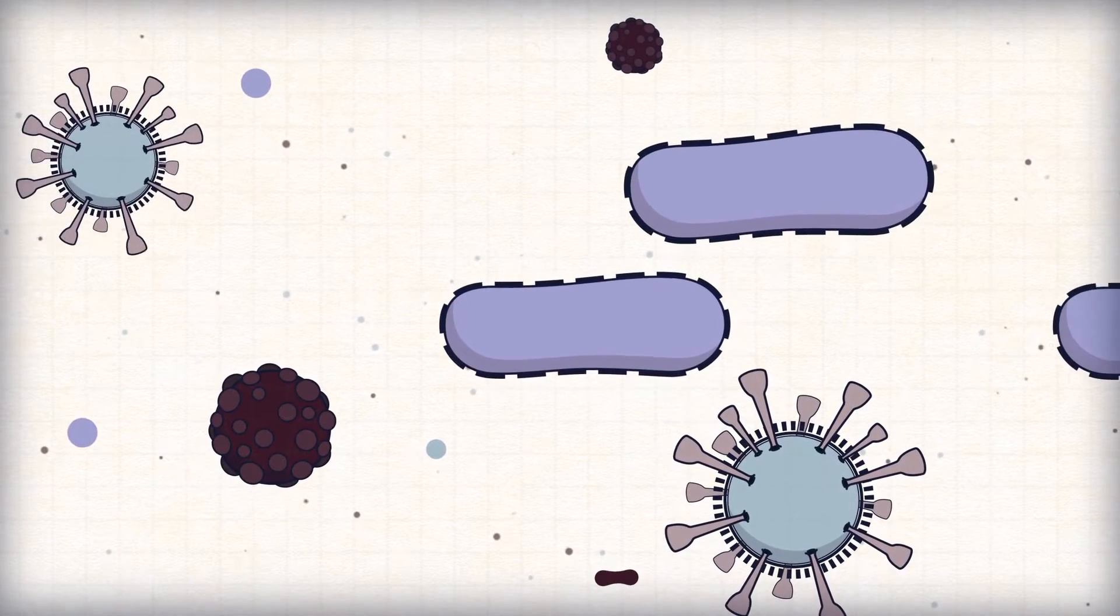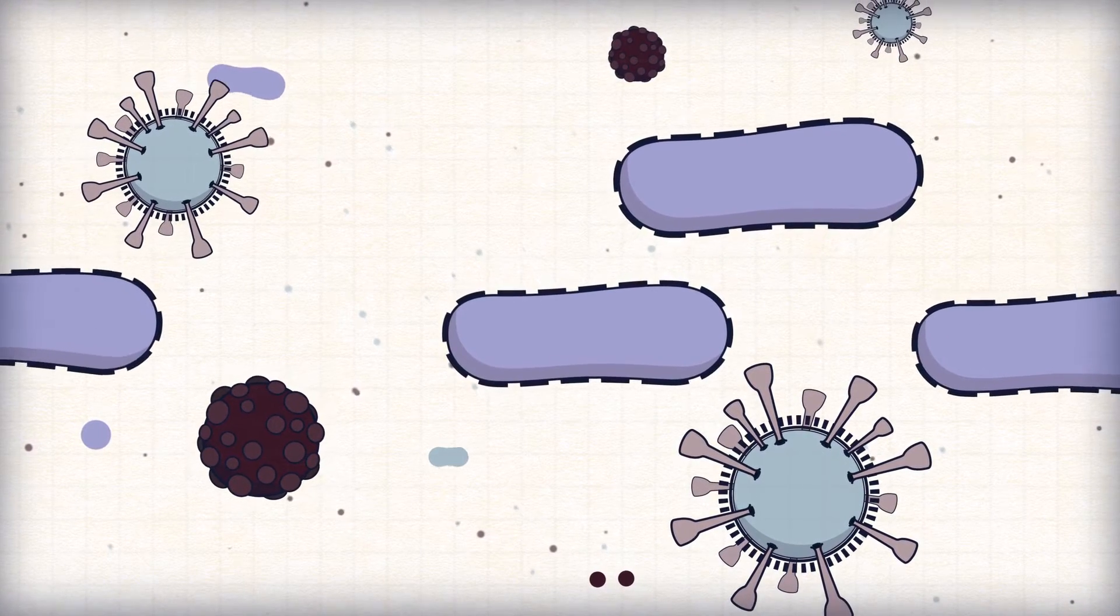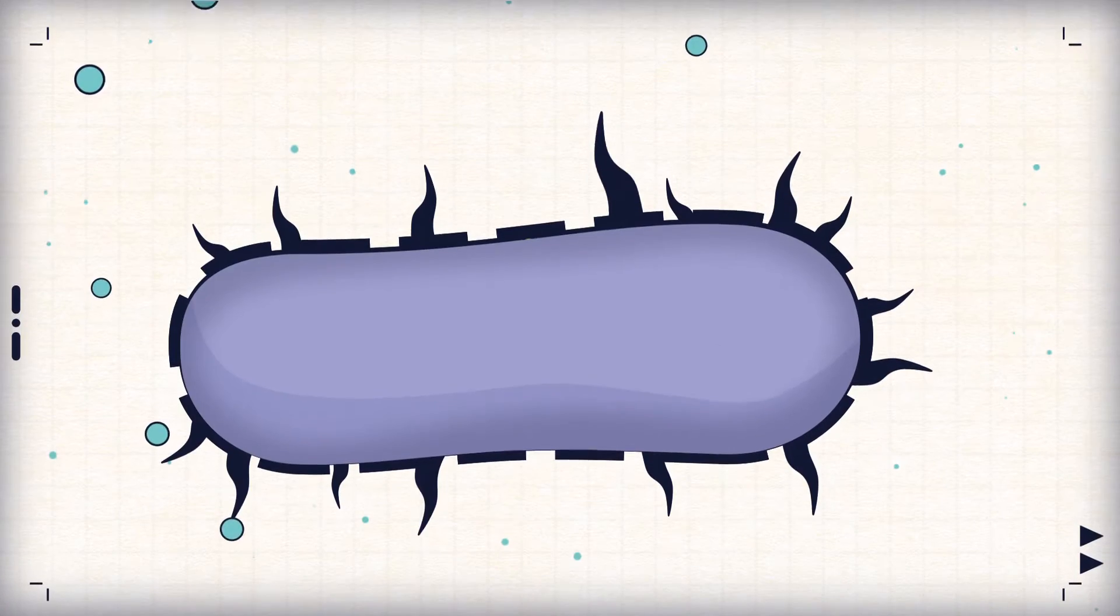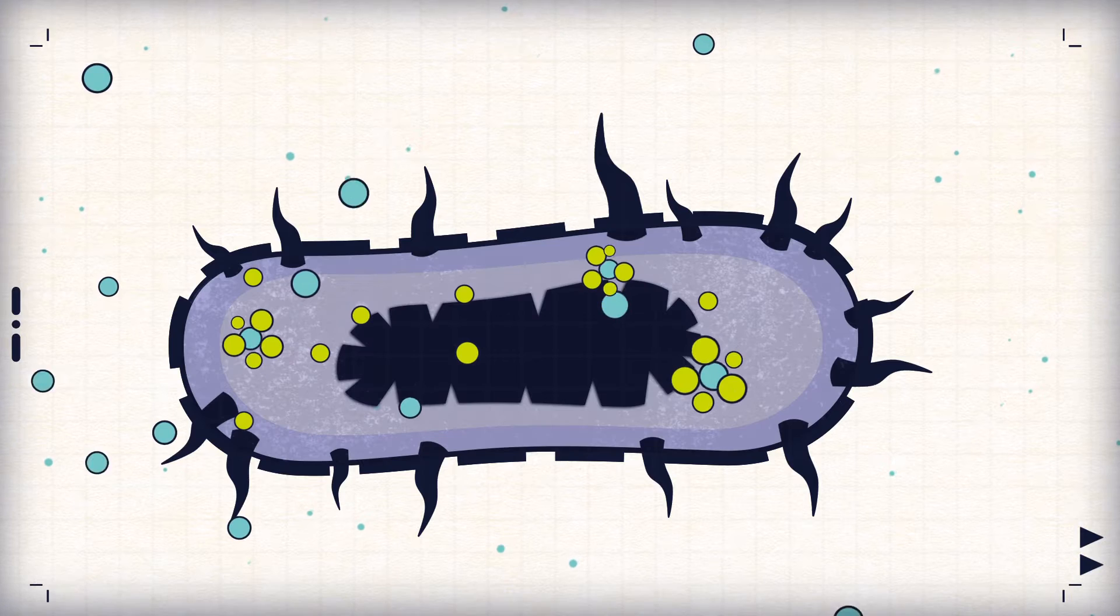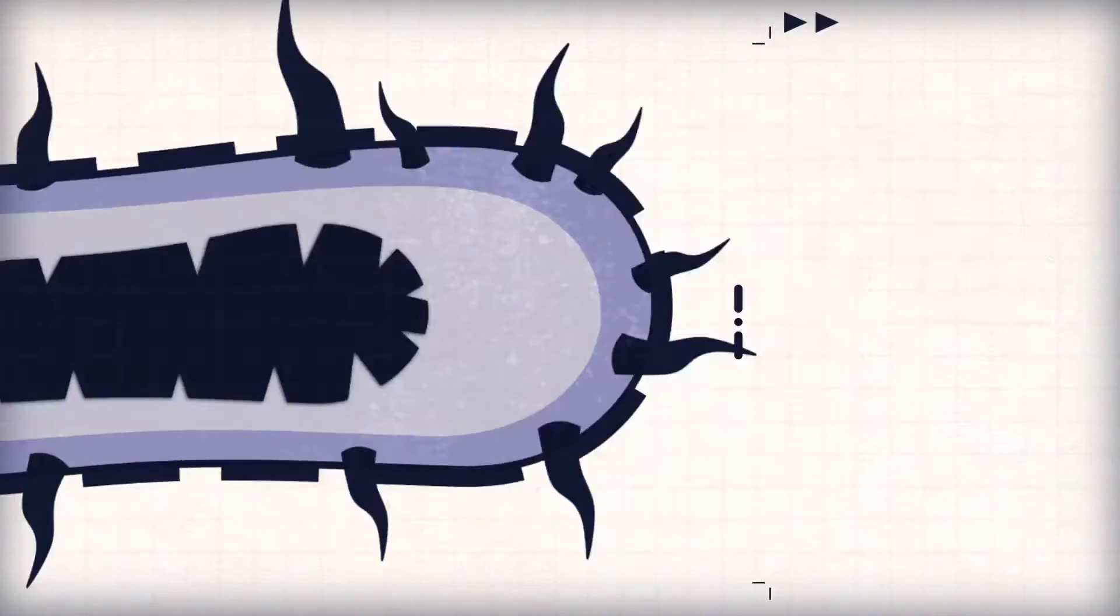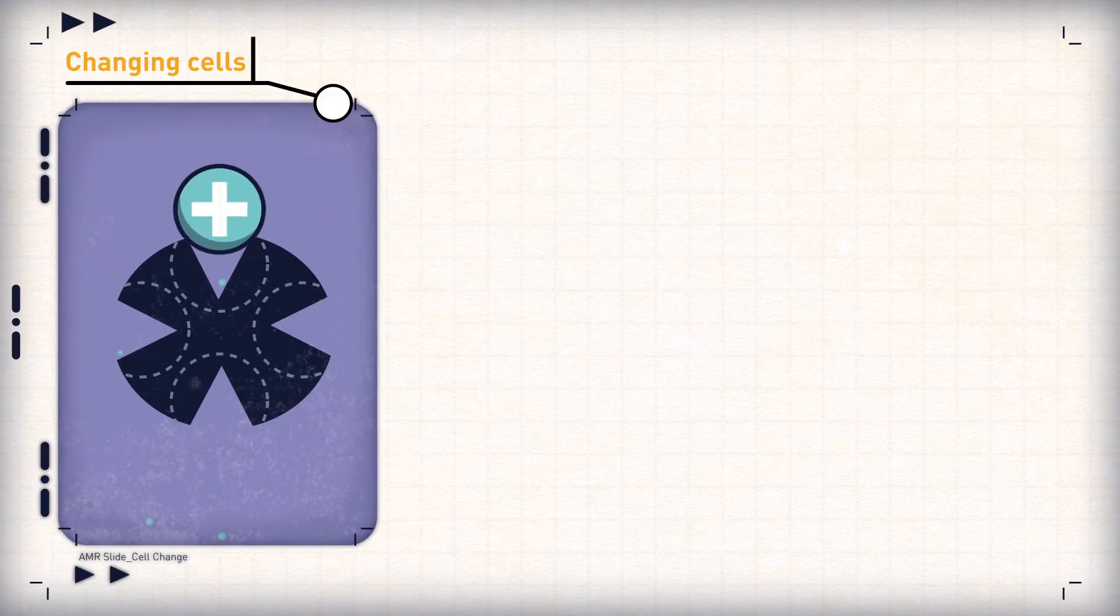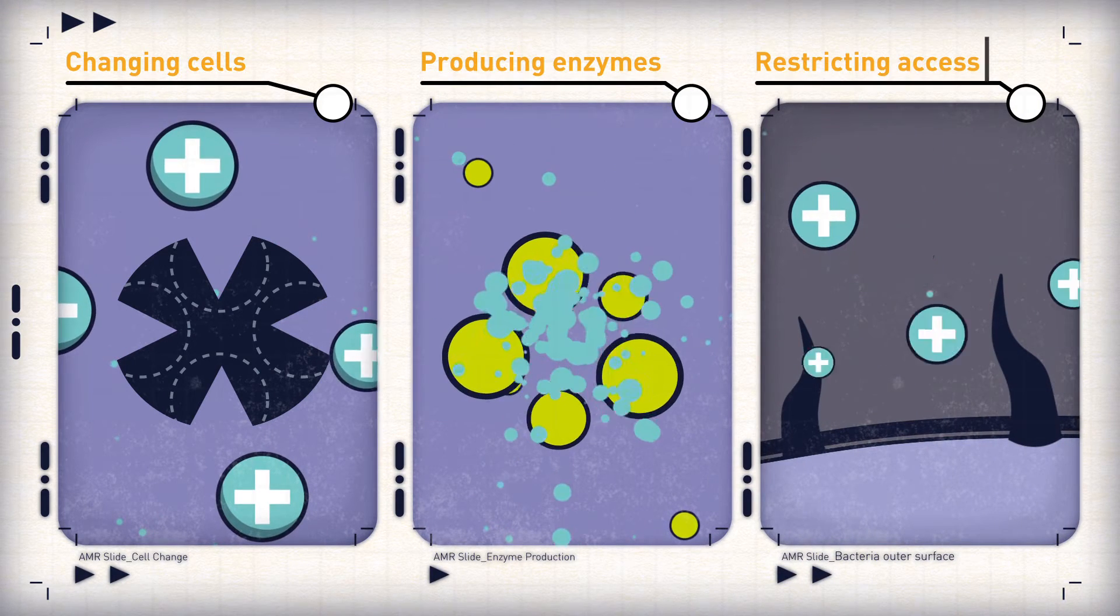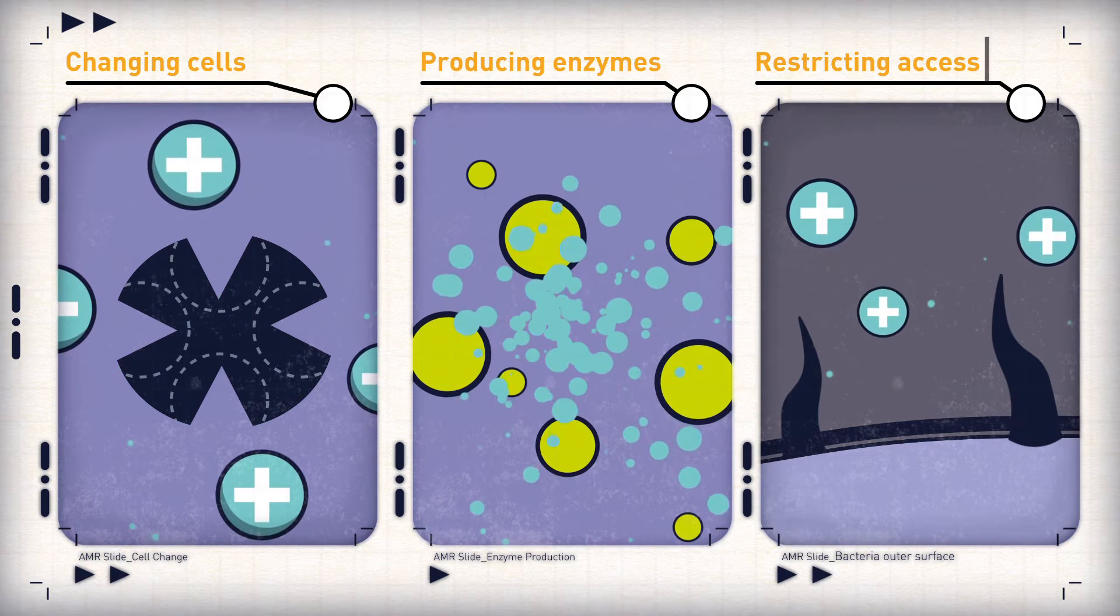As germs multiply, they evolve and over time, rare mutations can cause the DNA of the microbe to become resistant to antibiotics. They develop mechanisms to stop drugs, including changing their cells to remove the drug's target, producing enzymes to break them down, and also restricting access for them by limiting their entry points.